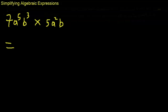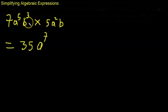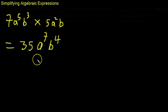Let's simplify this expression. 7 times 5 is 35, so you multiply the like terms. For a to the power of 5 times a squared, that's a to the power of 7 — we add the powers. For b to the power of 3 times b, which is really b to the power of 1, the base is b and the powers are 3 and 1, so we add them to get 4.